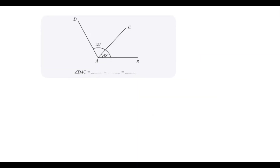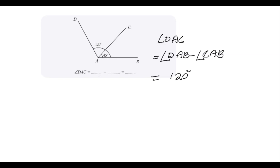Here also we need to find the small angle, that is angle DAC. This is also equal to the difference of the large angle DAB minus the small angle CAB. Angle DAB is given in the question, which is 120 degrees. Angle CAB is given in the question as 45 degrees. So 120 minus 45 will give the value of angle DAC, which is equal to 75 degrees.